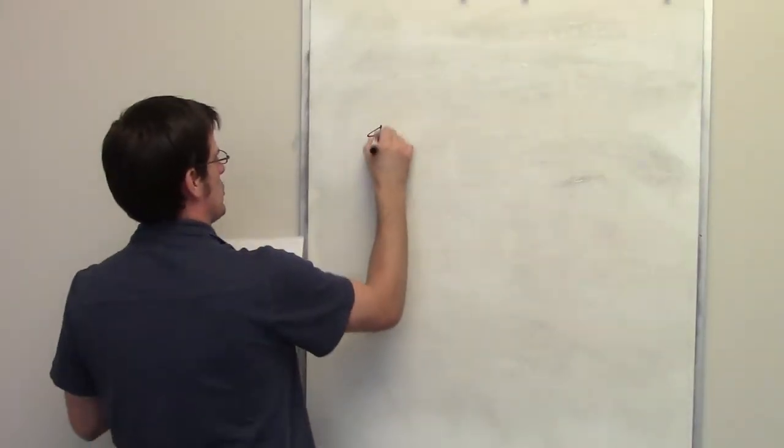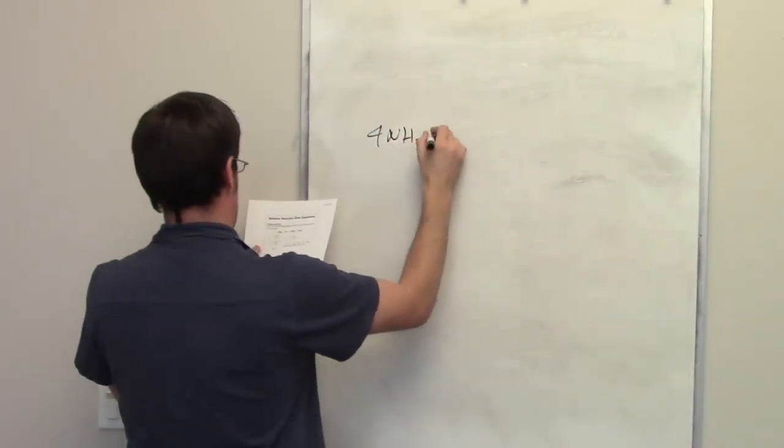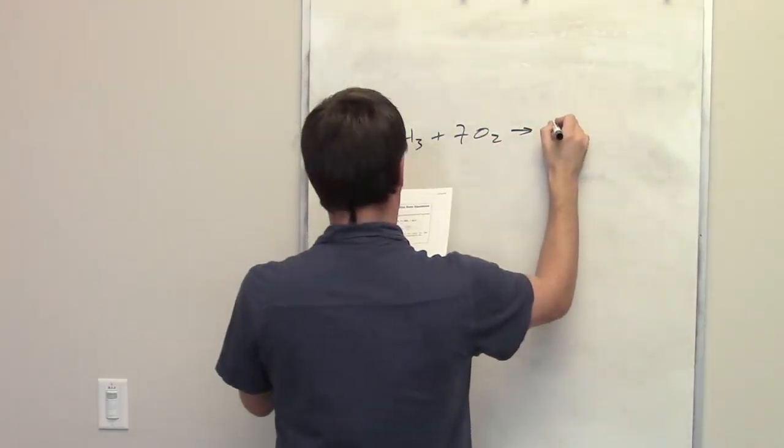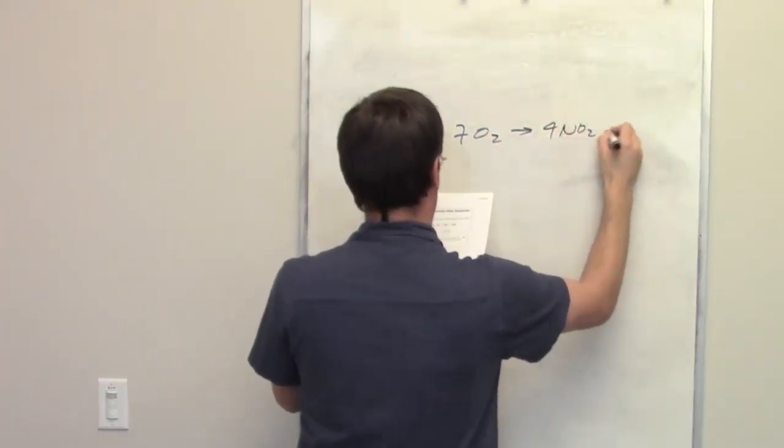This question gives us an equation: four moles of ammonia plus seven moles of oxygen combining to form four moles of nitrogen dioxide,